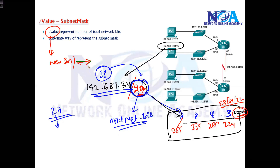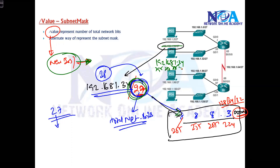In most networking devices the subnet mask will be written in slash format. Some devices only accept the subnet mask format; some only accept the slash value. In documentation it is difficult to write out the full subnet mask — for example, writing 255.255.255.224 next to 192.168.1.34 is quite lengthy — so in documentation we write it as slash notation instead.